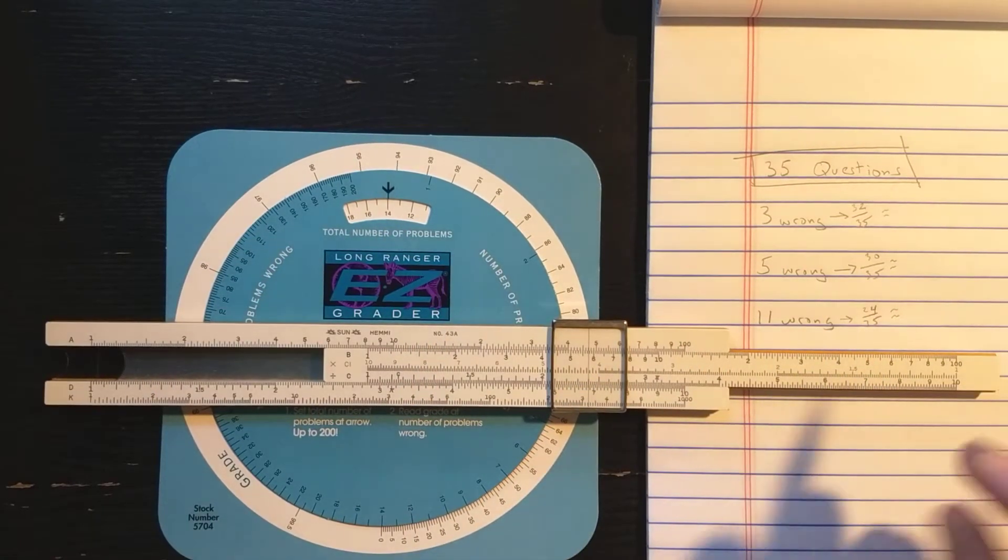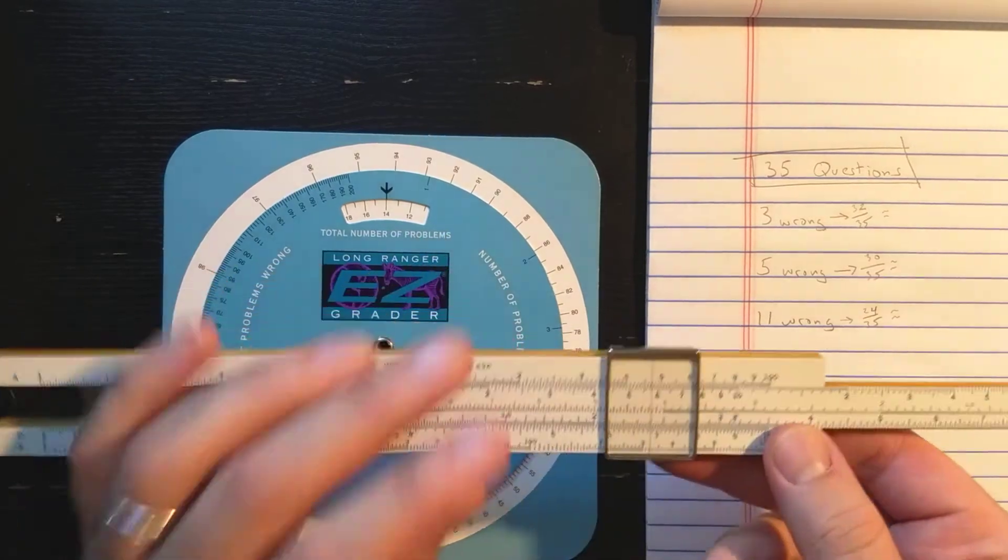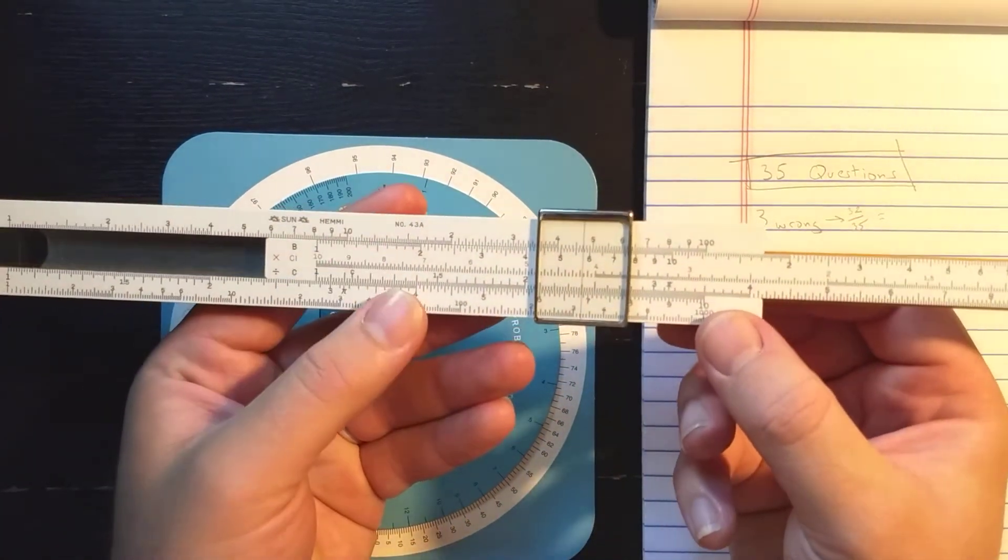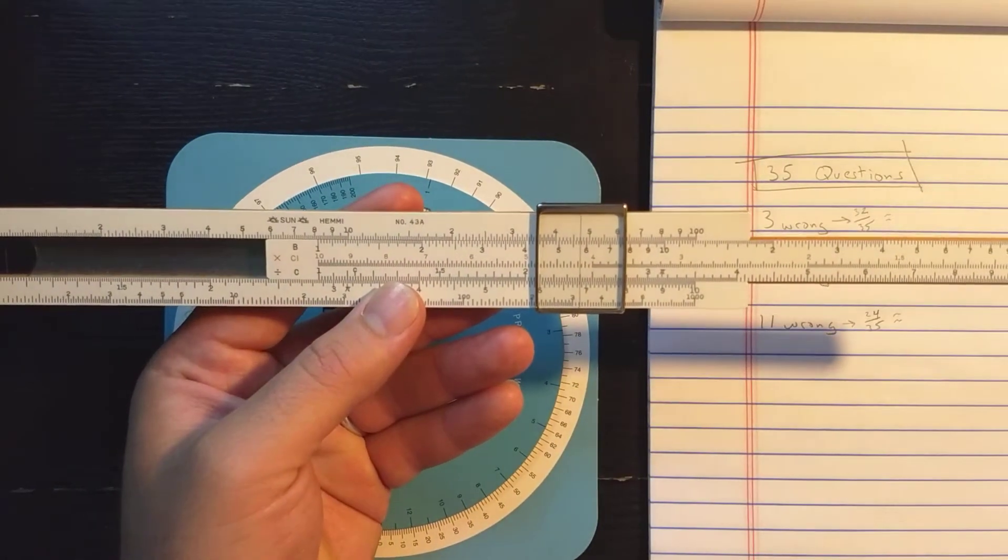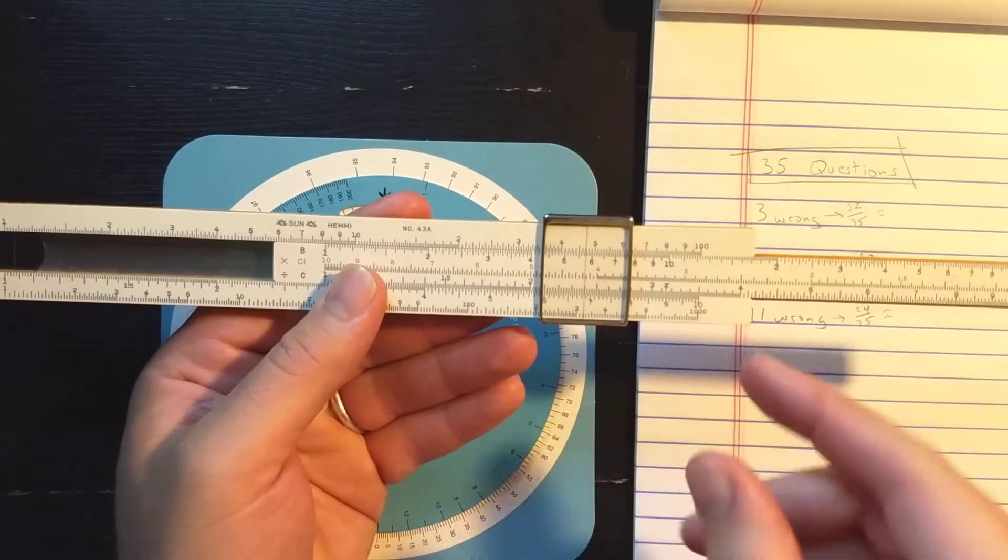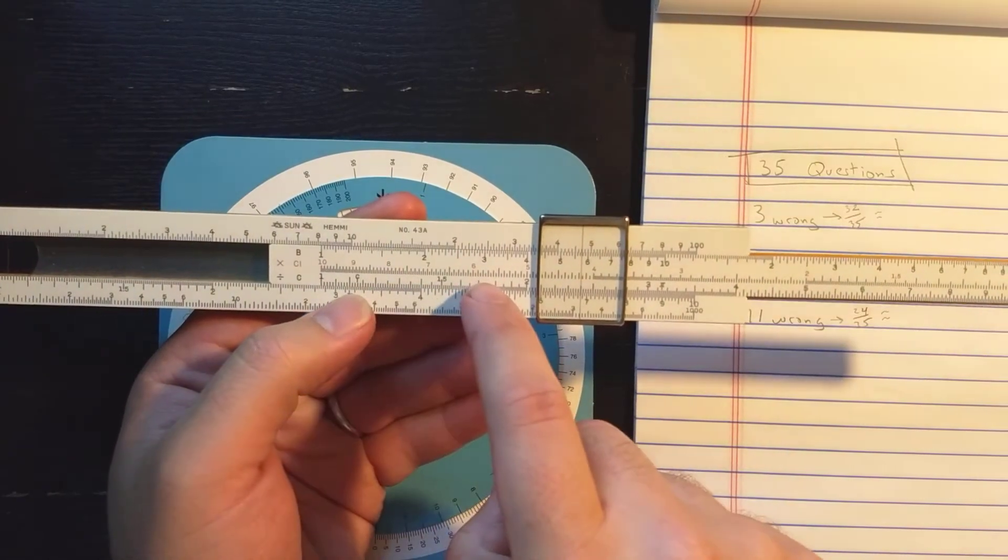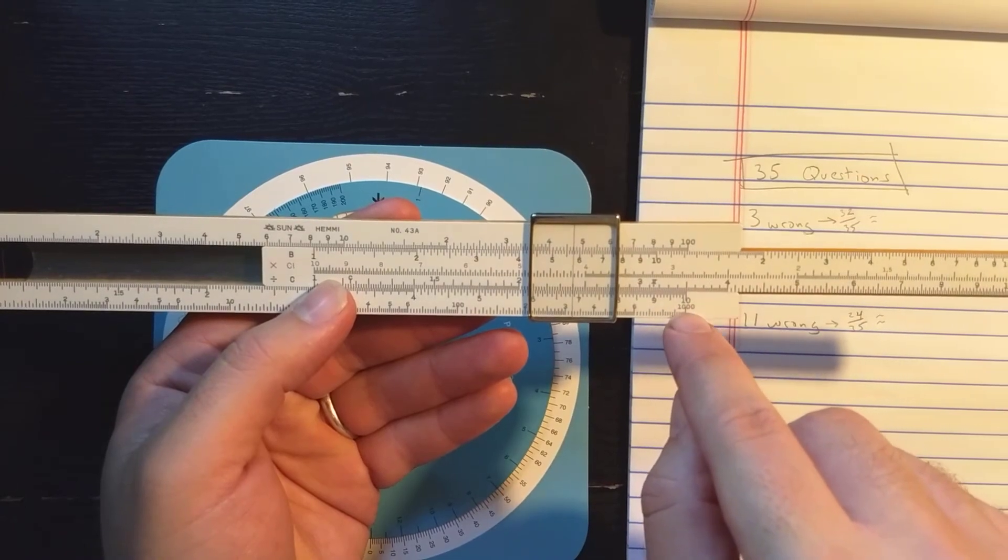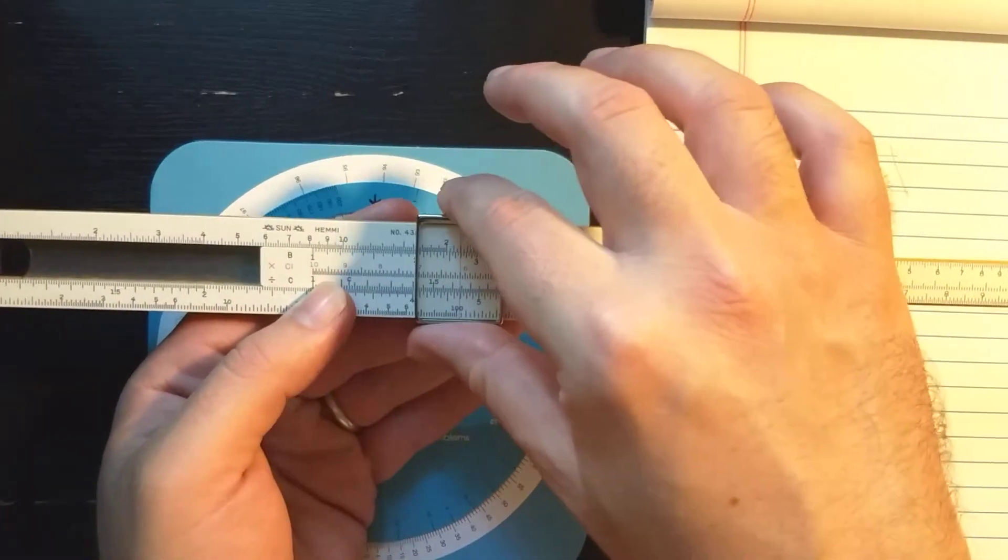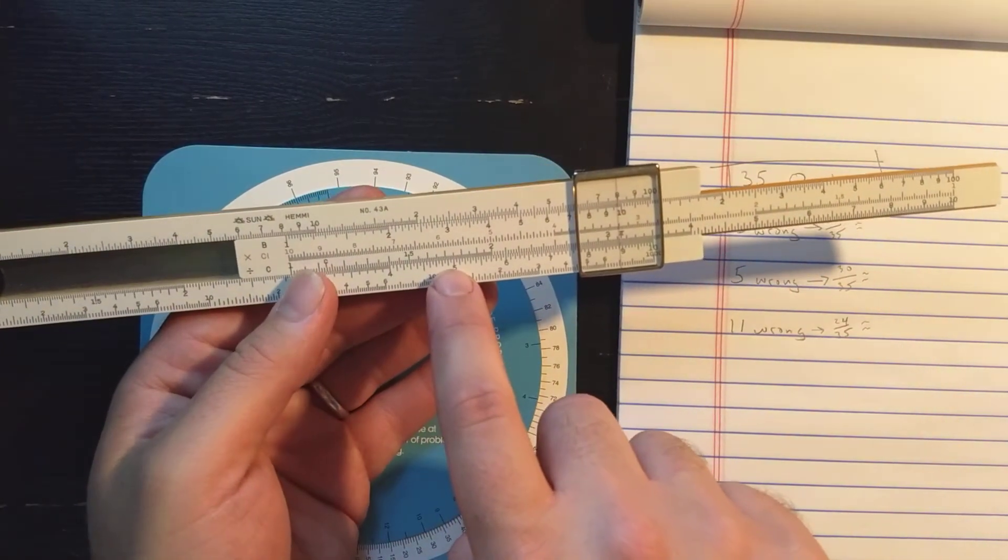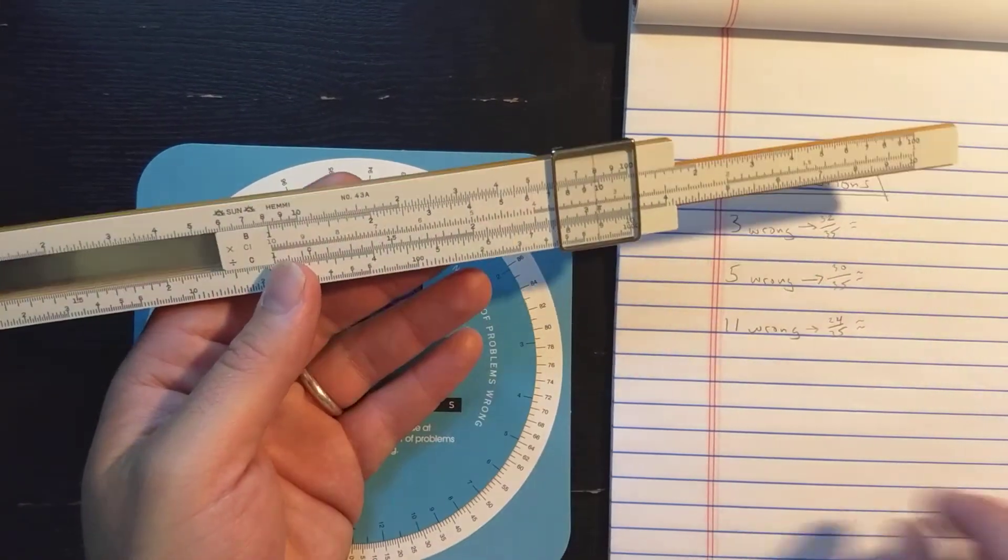There's a nice way you could do this on the slide roll if you're grading a lot of tests. So what I've done here is I've set the 35 on the C scale over the 1 on the D scale. Now, anything I find on the C scale, that's like saying 35 is 100%. Any other grade I can find on the C scale in terms of the numerator here, and then I'll read the grade as a percent on the D scale.